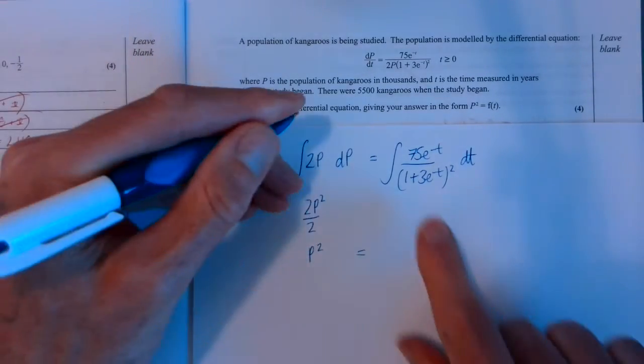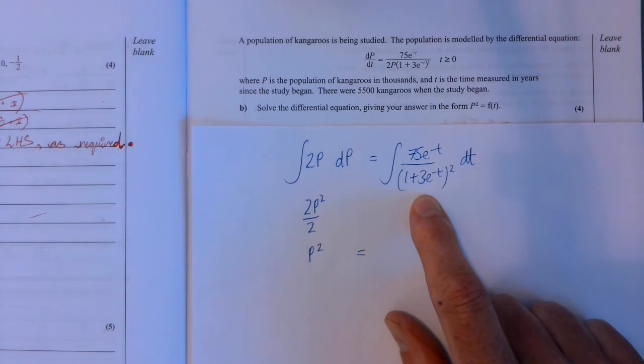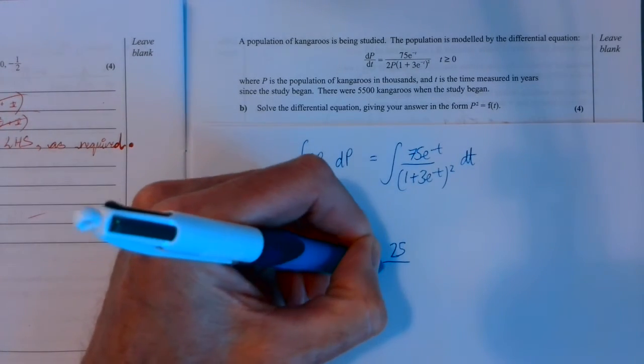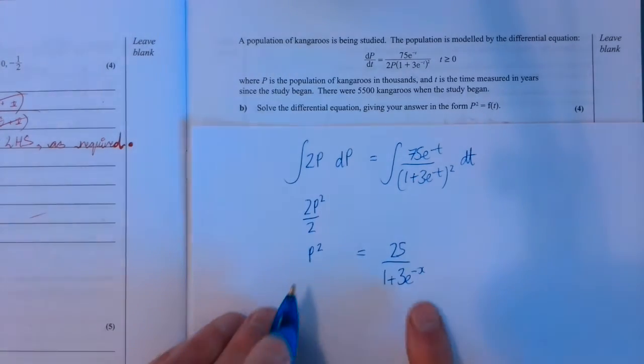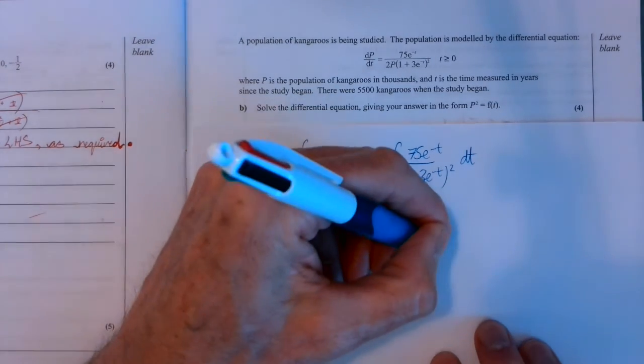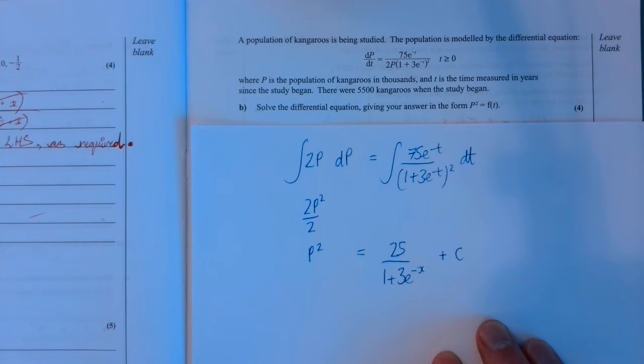And integrating this is what we just did a moment ago. And we got 25 over 1 plus. Both of those integrations would give us a plus c, which we then write like this.